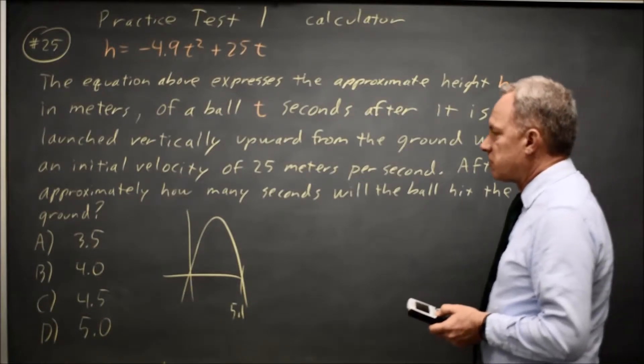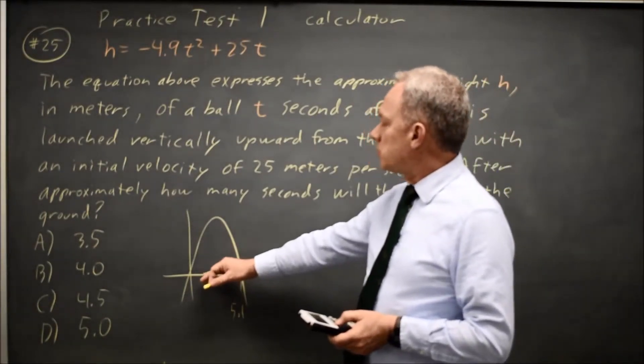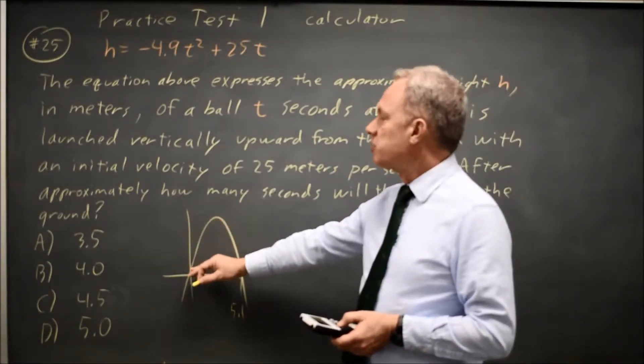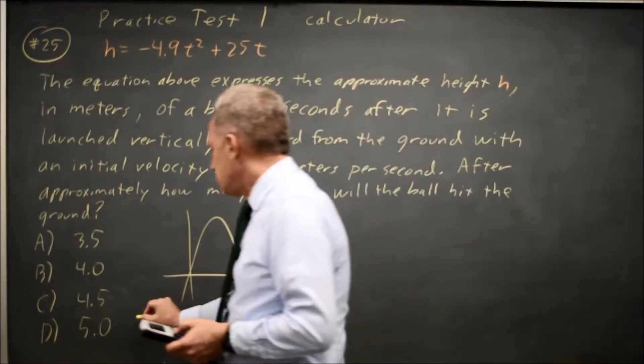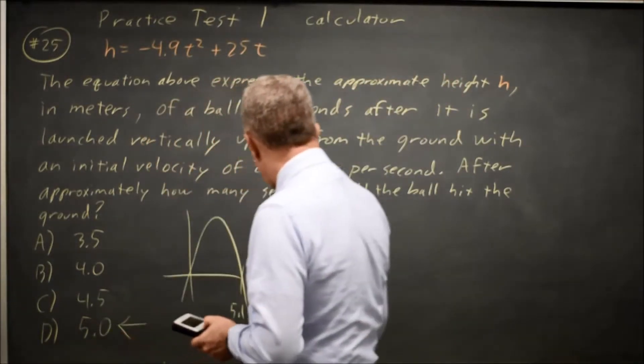Approximately how many seconds until the ball hits the ground? Since the h value is the height above the ground, it hits the ground at h equals 0, which is 5.1 seconds, approximately 5 seconds.